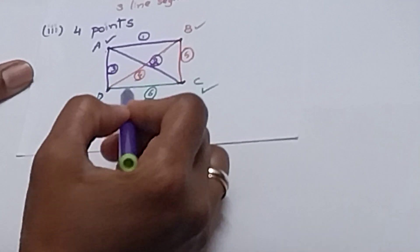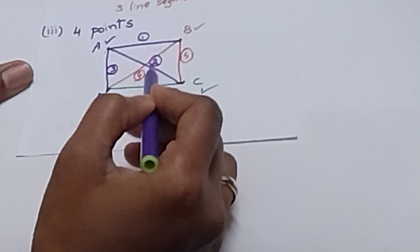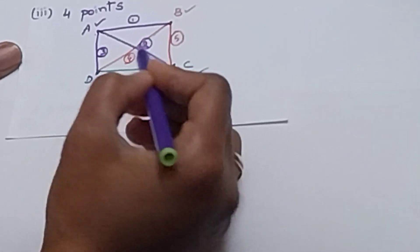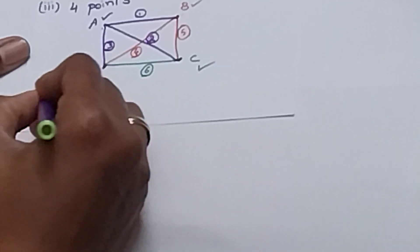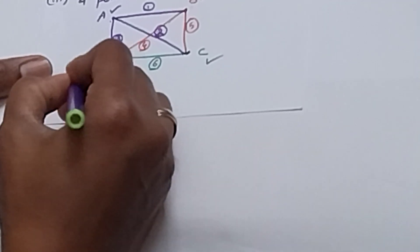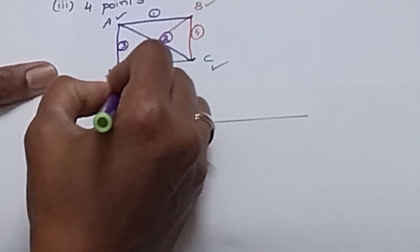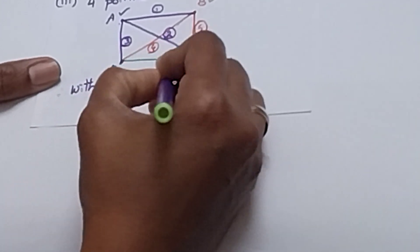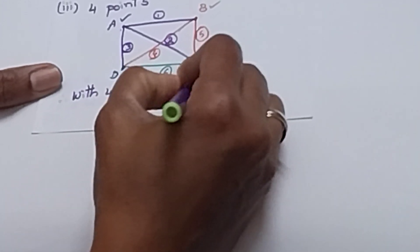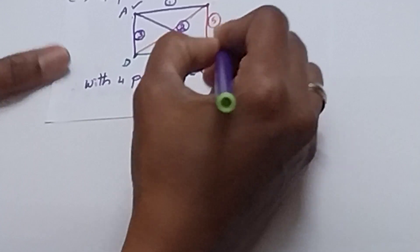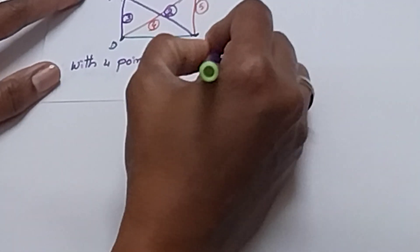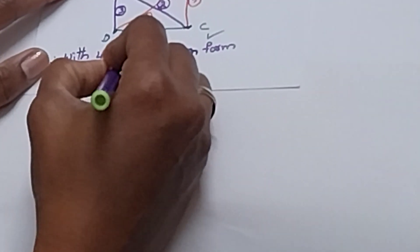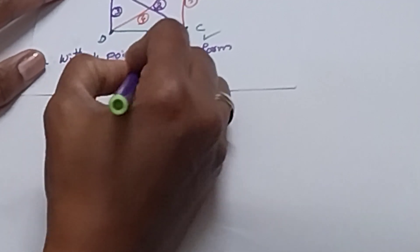So totally, how many line segments formed? 1, 2, 3, 4, 5, 6. Therefore, with 4 points, we can form 6 line segments.